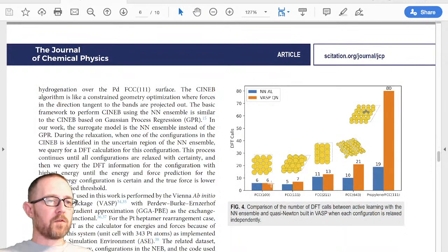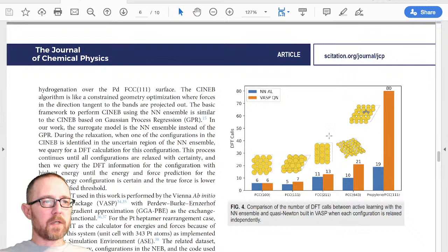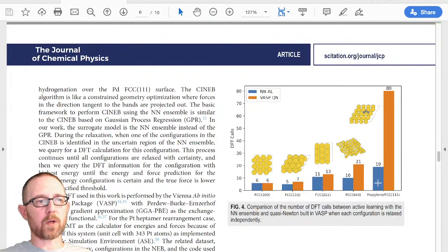So that's the first example that I want to show you. So the orange bars are the normal VASP quasi-Newton algorithm. It's one of the best that we've used. And then the blue bars show the number of DFT calls that are required with just the simple active learning process where we relax each configuration independently.